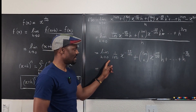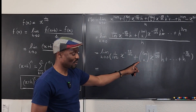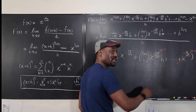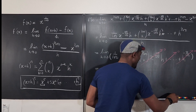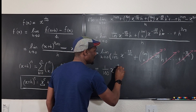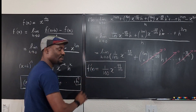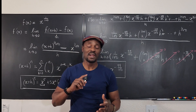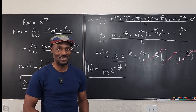Now we evaluate the limit as h goes to zero. Everything that contains h will go to zero — zero times those terms gives zero. The only term without h is the first one. So the only thing left is one over 100 times x to the negative 99 over 100, and that is the derivative of this function. This is exactly what you get if you apply the power rule. The binomial expansion is a great tool — master your factorials and expansions. I'll see you in the next video. Never stop learning, because those who stopped learning have stopped living.